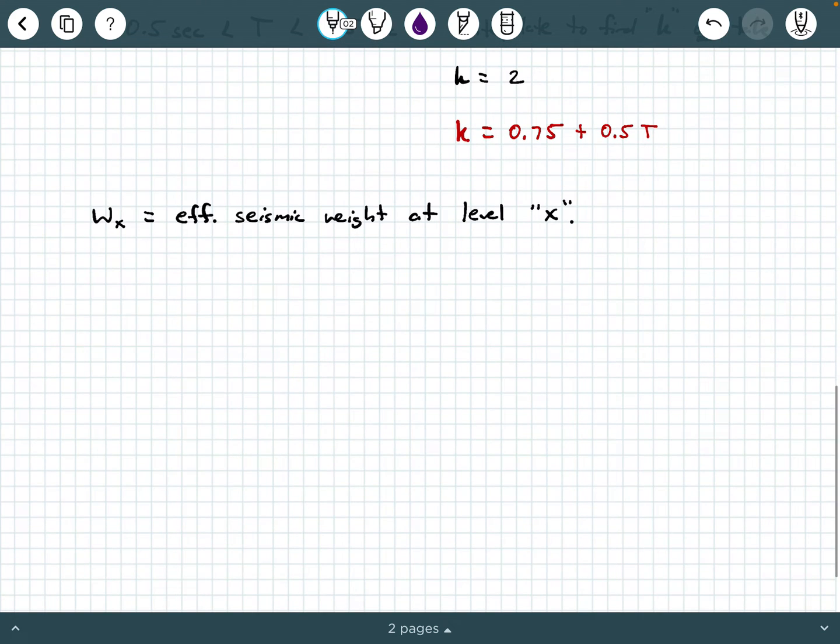Clearly the sum of W sub I as I goes from one to N should be equal to W1 plus W2 plus dot dot dot all the way to plus WN. What does that equal? That equals capital W. If you add up the effective seismic weights at each level, that's your capital W.